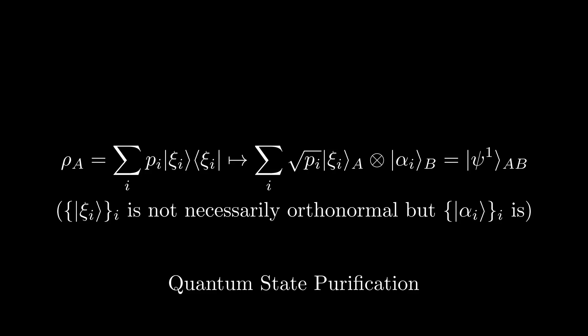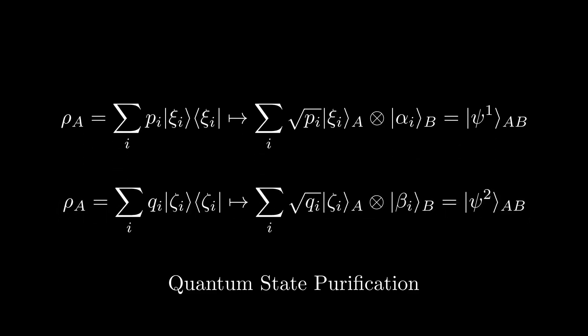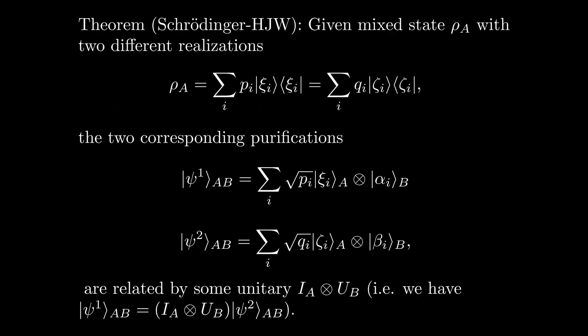However, note that the realization of rho A is not unique. We can always find a different ensemble of pure states that realizes exactly the same density matrix. In this case, we can also construct a separate purification psi 2 AB with a different B basis given by beta I kets. So, how are these two purifications related to each other? Well, this is precisely answered by the Schrodinger-HJW theorem. The HJW theorem states that given two purifications for two different realizations of the same density matrix rho A, there exists a unitary matrix UB such that psi 2 AB is equal to IA tensor UB acting on psi 1 AB, meaning that psi 1 AB can be written as follows.